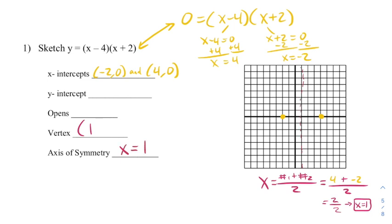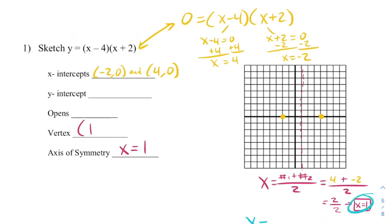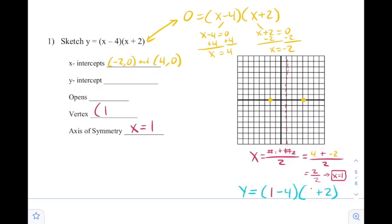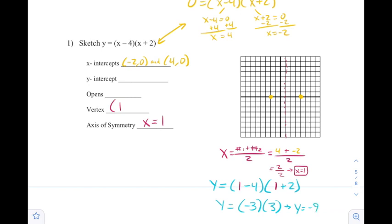I can dot that line on my graph so I can see it, and next we would find the y-coordinate of the vertex. Just as we did in lesson 1, we're going to take the original equation and plug the x-value into it. Plugging 1 into the equation, we get (1 - 4)(1 + 2), which gives us y = -9, making our vertex (1, -9). That point is going to be just a little bit off our graph, and I'm going to plot it.